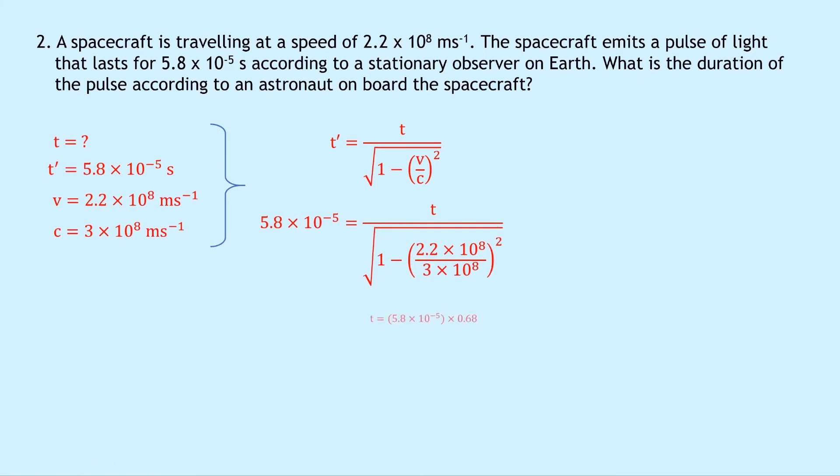And if you do that, it should simplify to t = 5.8 × 10⁻⁵ × 0.68. So this square rooted term should simplify to 0.68, and then putting that into your calculator should give you an answer of 3.9 × 10⁻⁵ seconds. And a quick check to see if this answer is reasonable is that this value of proper time should be smaller than the relativistic time t', and that is the case here.